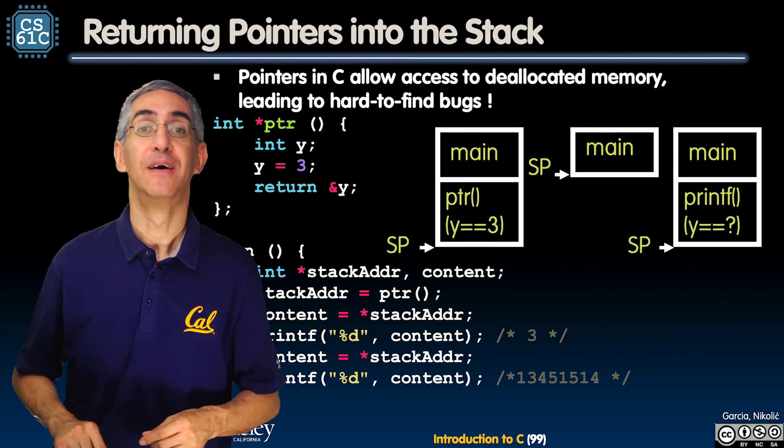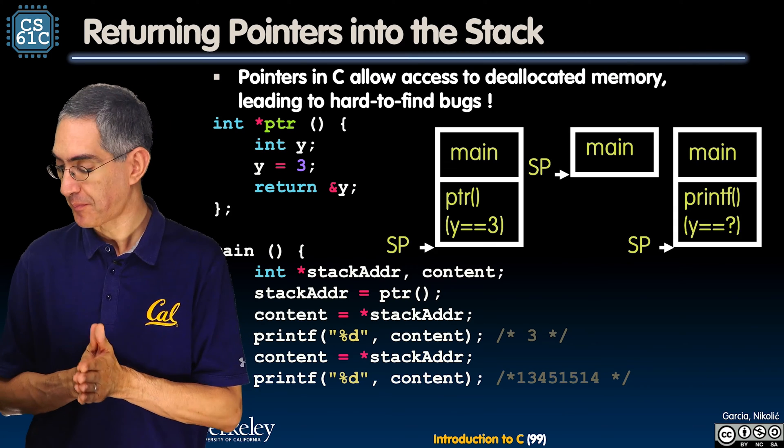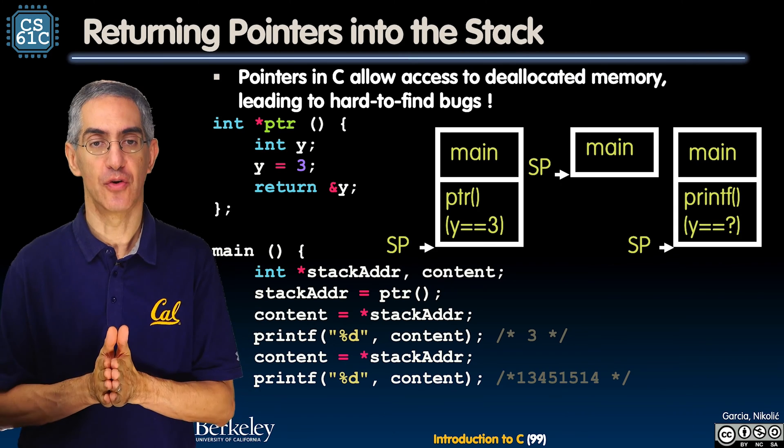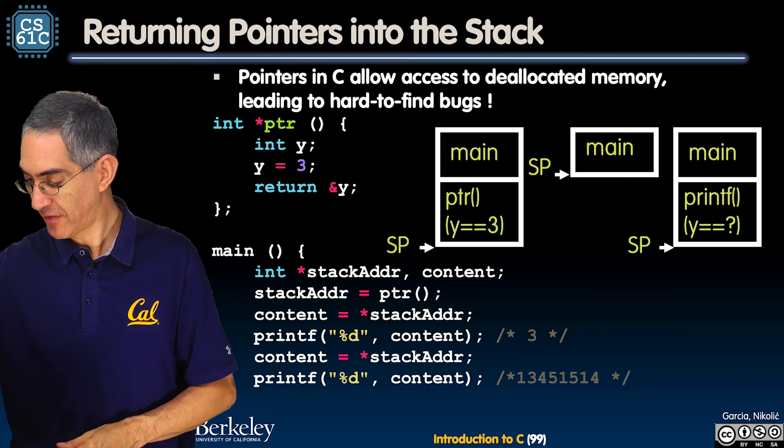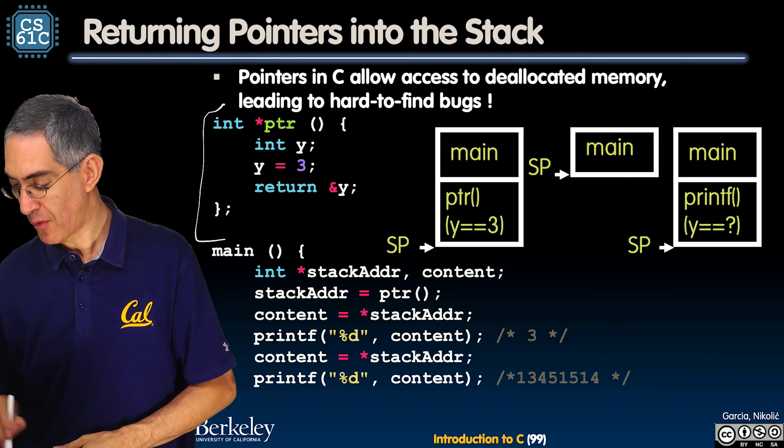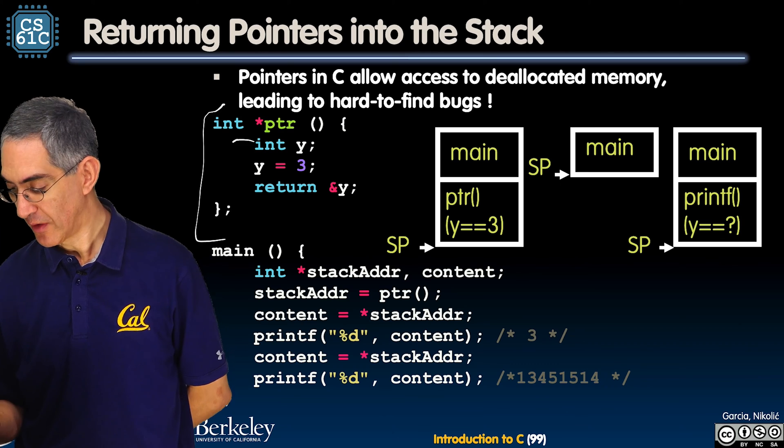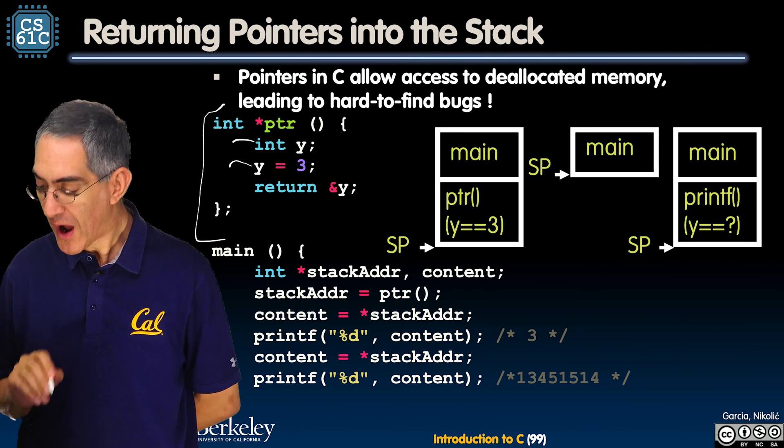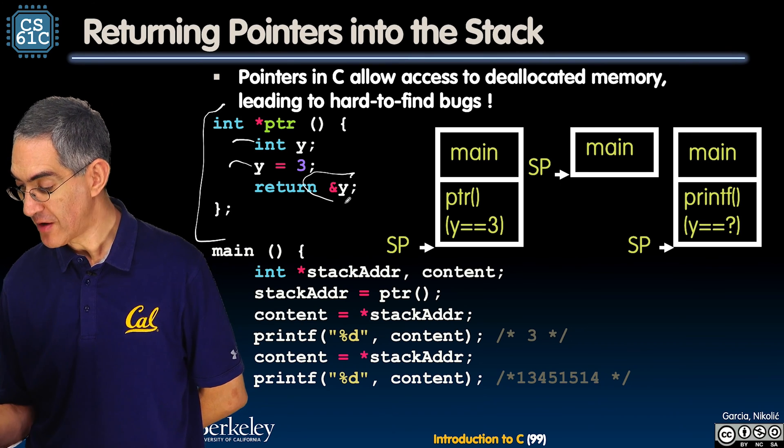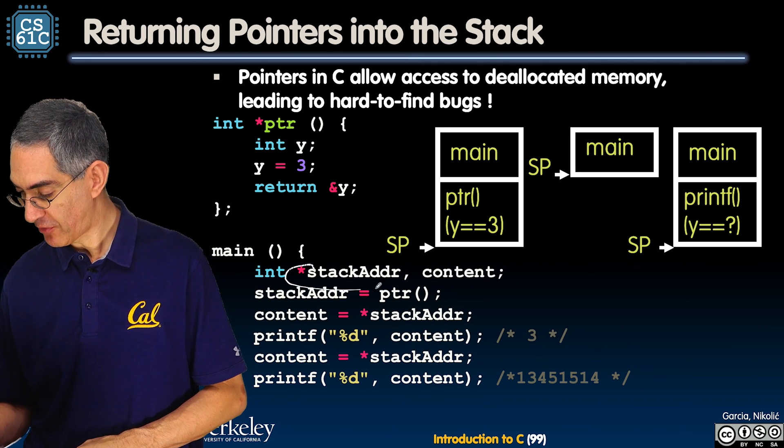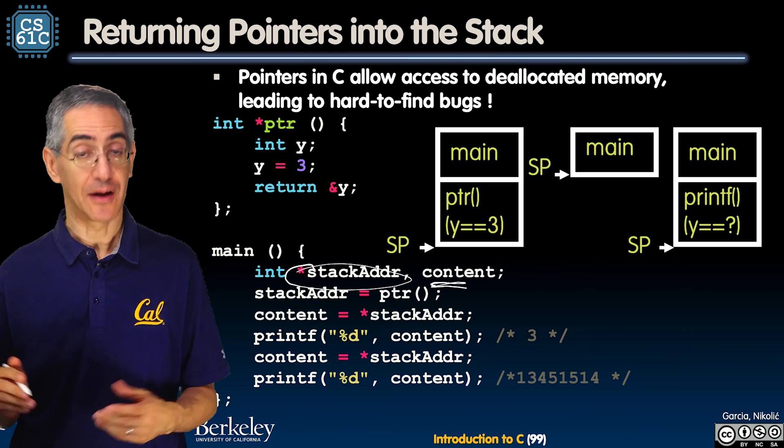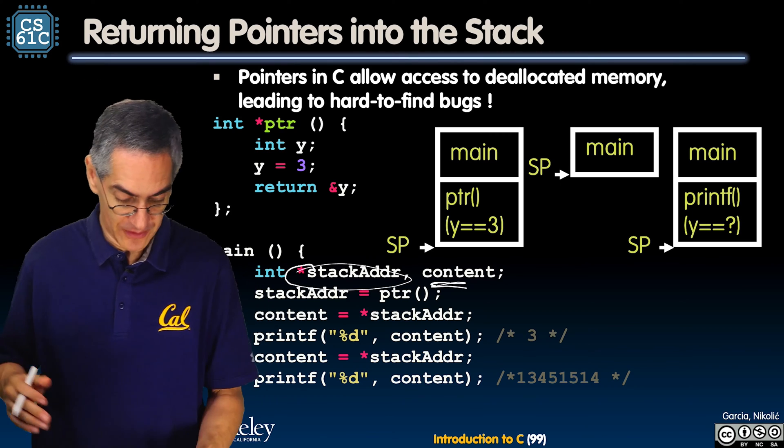This is a great example. You cannot return a pointer into a memory stack space. Here's this little guy, very simple. Here's this pointer function. It sets a little cute Y, sets it to three and returns a pointer to it. Well, you're not supposed to do that.